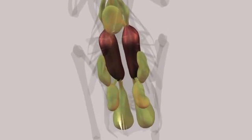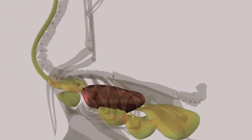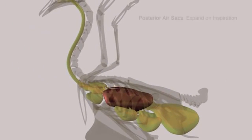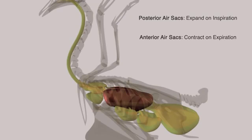All of the air sacs participate to some extent in the respiratory process. All of the posterior air sacs expand on inspiration, while all of the anterior air sacs contract on expiration.